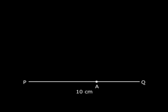I want to find a point A on this line segment such that PA by AQ is 3 by 2. How will I do that? Think about it.